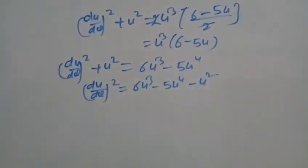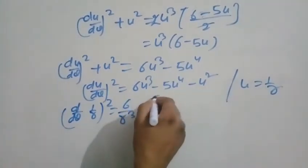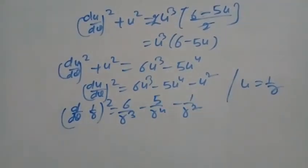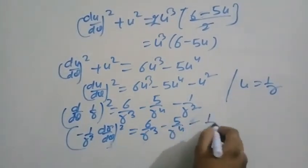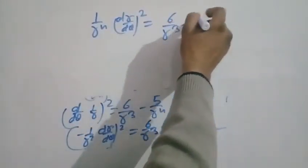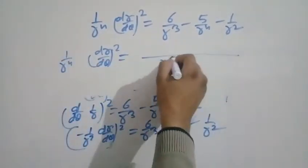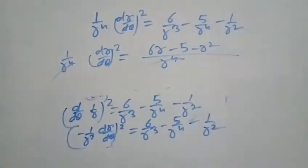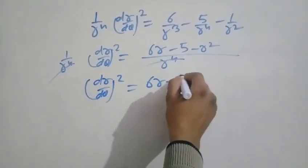Rearranging: (du/dθ)² equal to 6u³ minus 5u⁴ minus u². So dr/dθ expression upon r simplifies. We get h²(dr/dθ)² equal to 6/r³ minus 5/r⁴ minus 1/r². The equation becomes separable in r and θ.